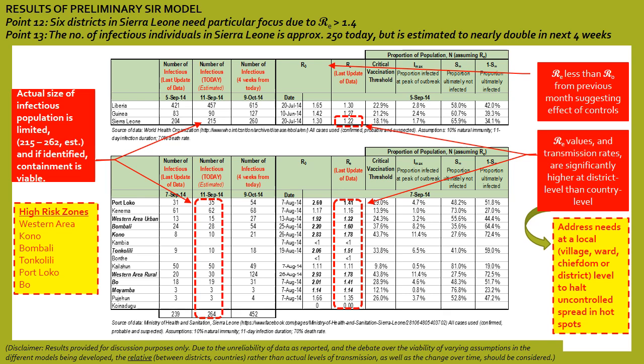It is clear, comparing the countrywide versus district results, that unless you get down to localized levels — village, ward, chiefdom, district — you will miss the hot spots that really need attention. If you look at Sierra Leone as a whole, the R value is 1.22; however, at the district level, you can see that six districts as well as the western area all exceed this value. The number of individuals actually infectious at any point in time is significantly less than the number of total reported cases, but even a small number can rise dramatically with time if the R value is high.